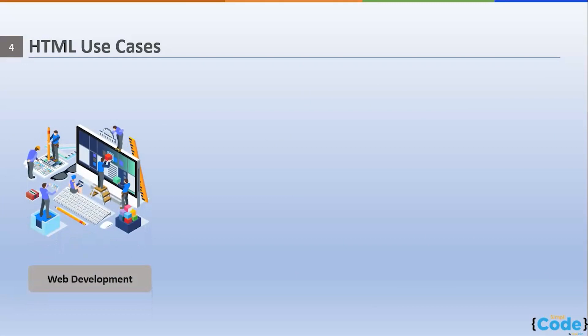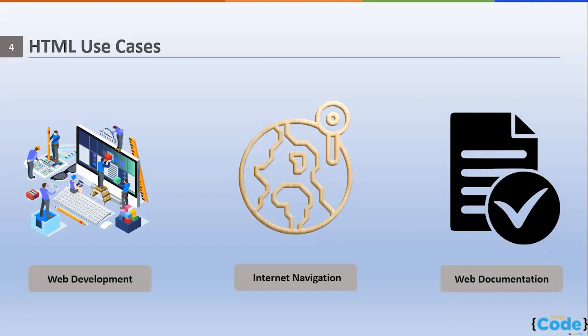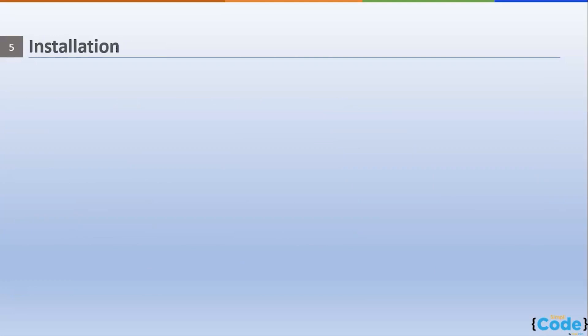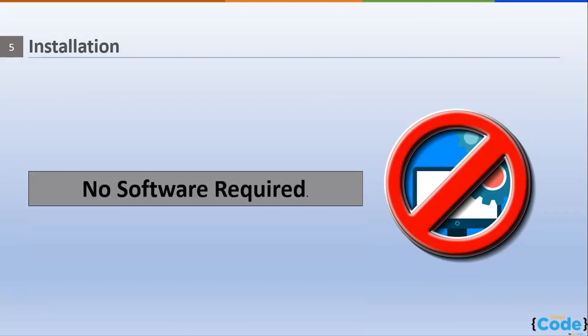HTML has a lot of use cases. In web development, HTML code is used to design how a browser displays page elements such as text, hyperlinks, and media files. For internet navigation, users can insert links between related pages as HTML heavily uses hyperlinks. For web documentation, HTML makes it possible to organize and format documents similarly to Microsoft Word. HTML does not require any special software — even Notepad is enough to start.